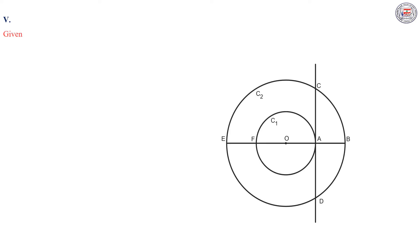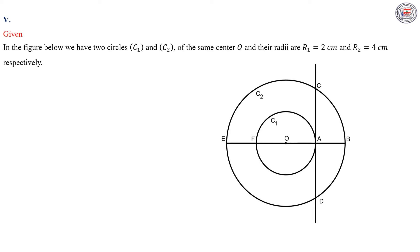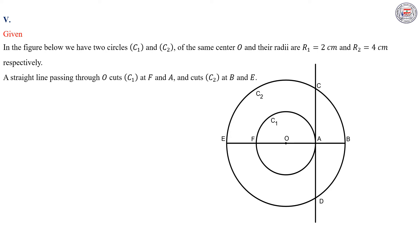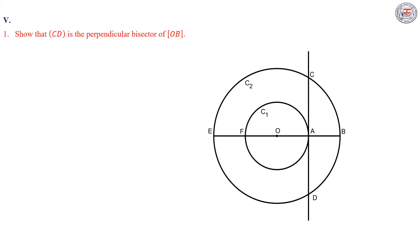In this exercise, in the given, we have in the figure below two circles, C1 and C2, of the same center O, and their radii are R1 equal 2 cm and R2 equal 4 cm respectively. A straight line passing through O cuts C1 at F and A and cuts C2 at B and E. The tangent to circle C1 at A cuts the circle C2 at C and D. In part 1, we have to show that CD is the perpendicular bisector of OB.